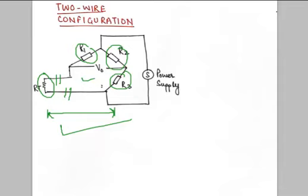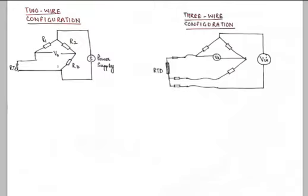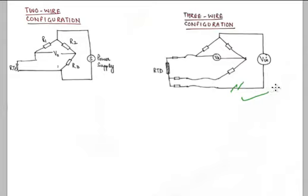When accuracy is a major concern and we cannot neglect the resistance contributed by the connecting leads, we use a three-wire configuration. A third lead — also called the compensating lead — is attached to nullify the effect of the connecting leads' resistance. All other construction parameters remain the same.